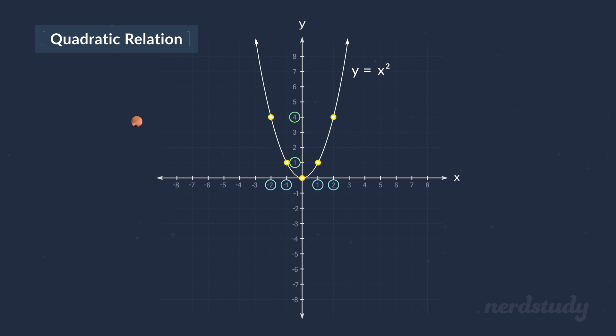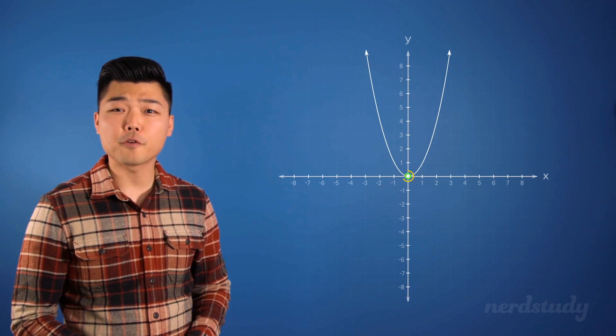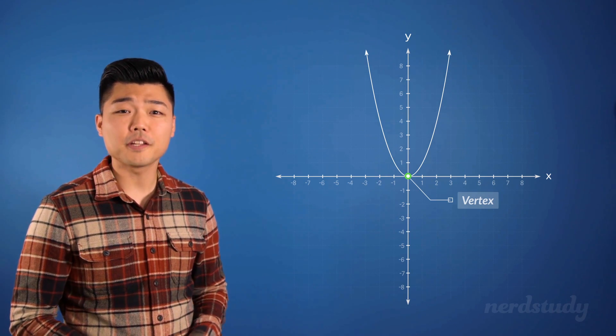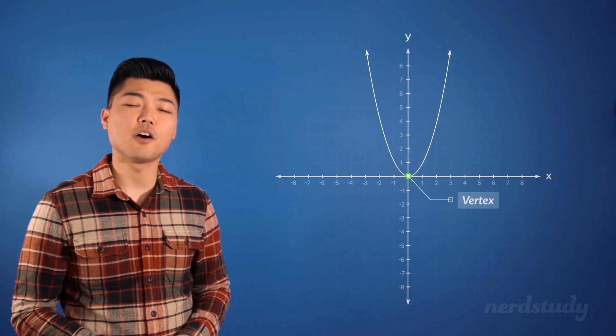Great. Now, this point right over here is called the vertex. And like we mentioned before, it does not necessarily have to be on the origin.